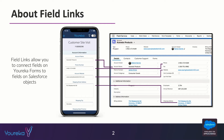Field links are important because they do a couple of things. Number one, they allow you to update information on different records inside of Salesforce, which can be really powerful. These forms can map information to many different objects at once, even from a single form.